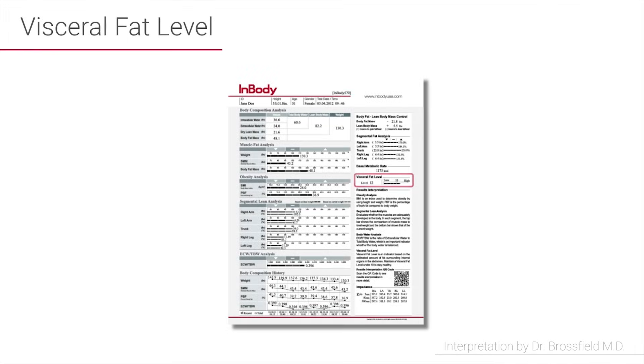The section below the basal metabolic rate is the visceral fat level. The visceral fat level is great to learn about because it actually gives you a number that tells you how much fat you're storing around your deep belly organs. The deep belly organs can store fat in such a way that that fat takes on the nature of an endocrine gland. It actually starts to make toxic hormones that are inflammatory inside the body.